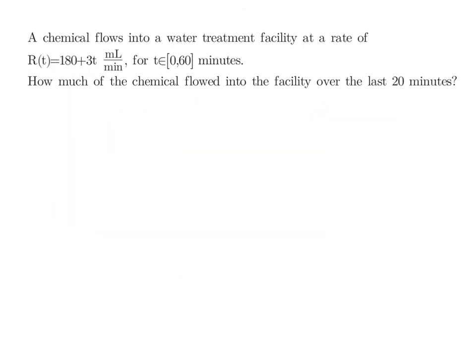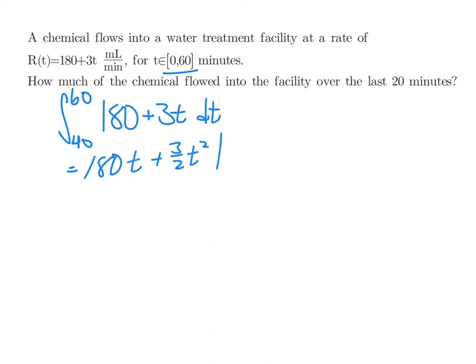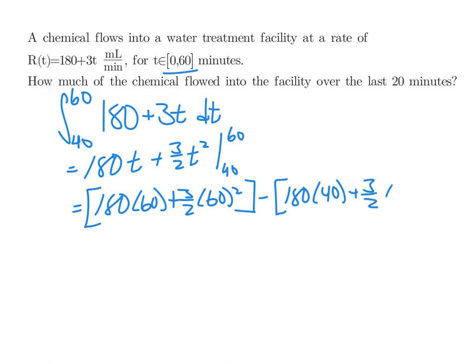Just for practice, let's try the same example this time. How much of the chemical flowed into the facility over the last 20 minutes. And since we're talking about our time covering an hour, the last 20 minutes would be from 40 to 60. And we're going to take our rate of change function. When we calculate it, we'll still end up with the same integral. Just evaluating from 40 to 60 this time. When it's all said and done, then you plug in 60 first. And then subtract what we get when we plug in 40. I'm not going to go through it all. But what you should end up with is 600.